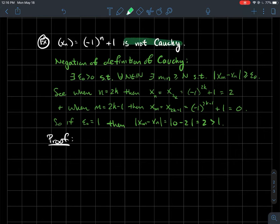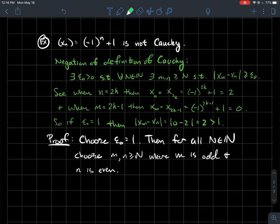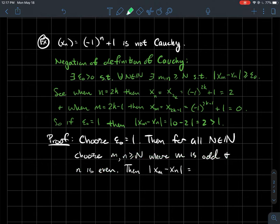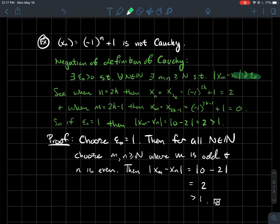Choose epsilon_0 = 1. For every natural number capital N, you can always find an even number and an odd number just past N. The term at the even index equals 2 and the term at the odd index equals 0, so |xm - xn| = |0 - 2| = 2, which is larger than 1. Therefore we have shown that the definition of not being Cauchy holds for this sequence.